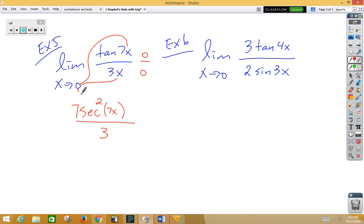Well, now we're plugging in a 0. Well remember, secant is the reciprocal of cosine. And when you flip cosine upside down, or flip 1 upside down, you still get 1. So this is really 7 times 1 squared over 3, which is 7 thirds.